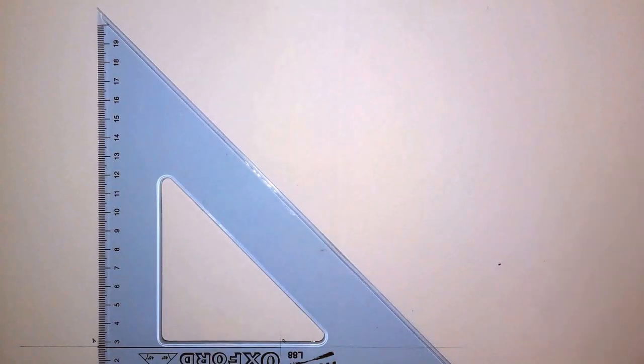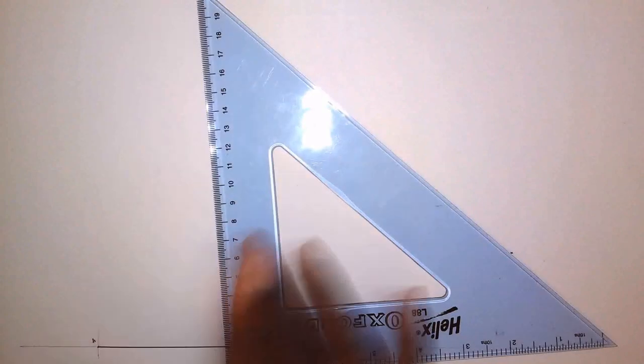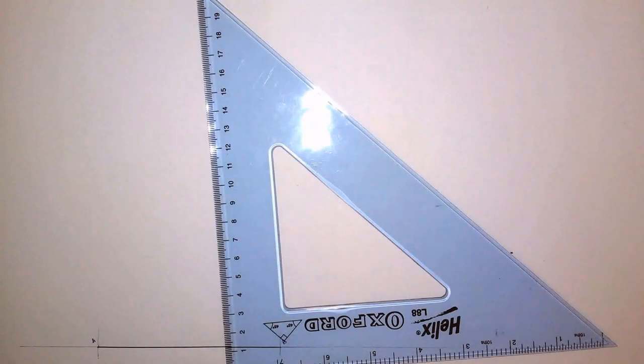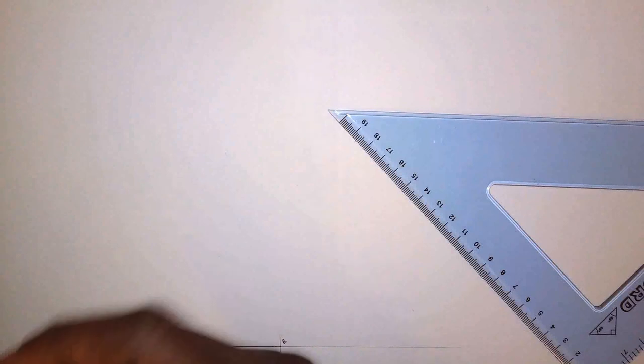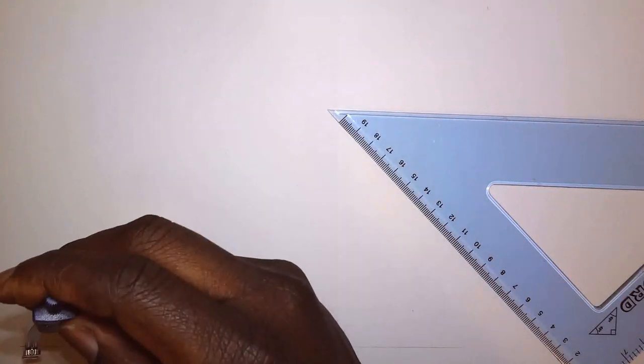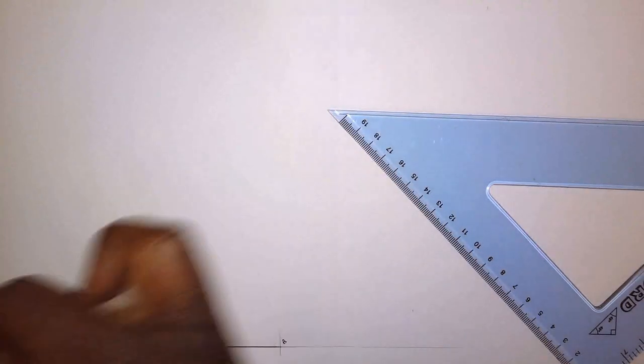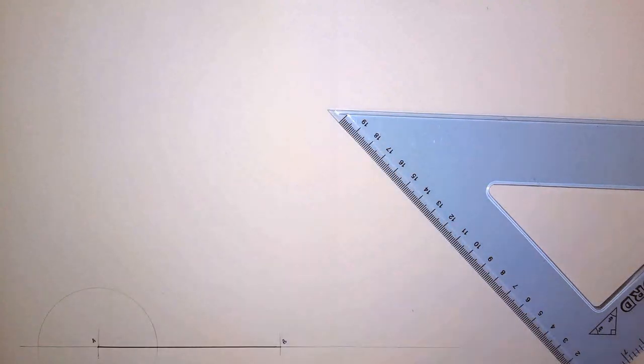Now, I could either construct another bisector which would be 90 degrees. I think I'll do that. Let's do that. Let's give that a go. Because this is what I'm going to do. I'm going to use a pair of compass. I'm just going to open to a reasonable distance. I'm going to draw a semicircle. A semicircle like so.